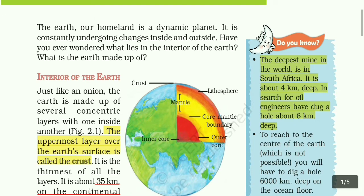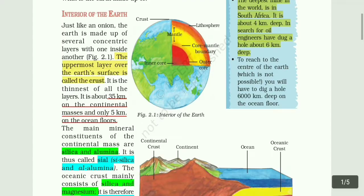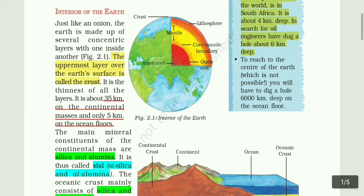The uppermost layer over the earth's surface is called the crust. This is the thinnest of all the layers. It is about 35 km on the continental masses and only 5 km on the oceanic floors.